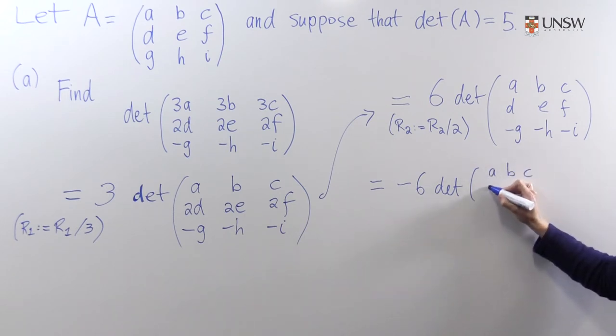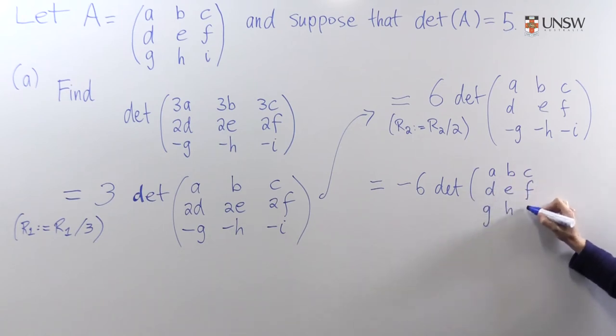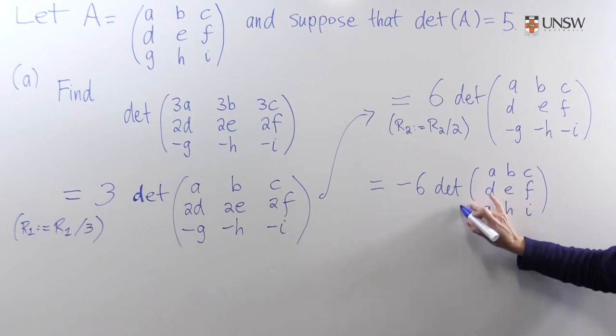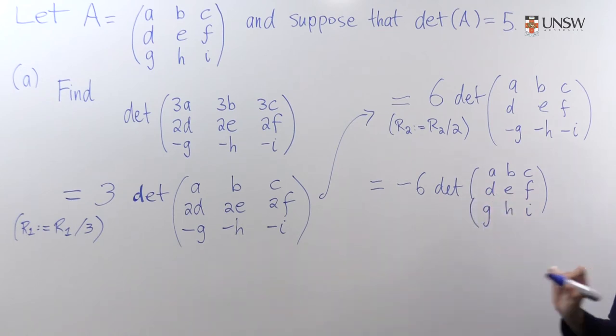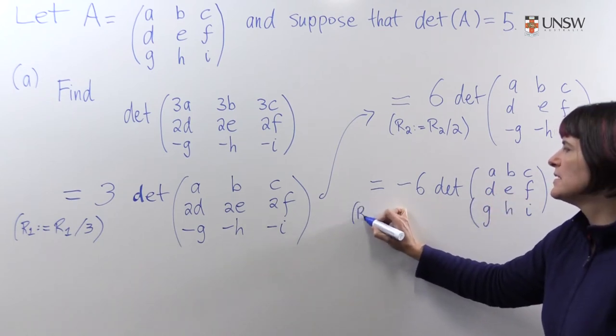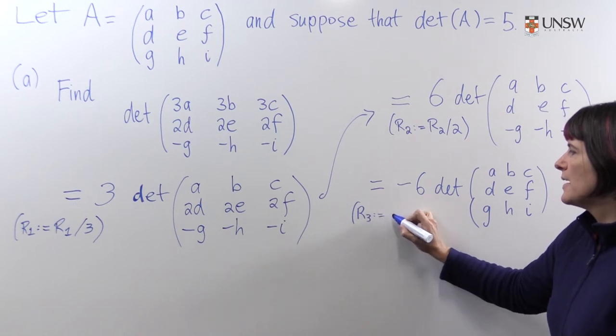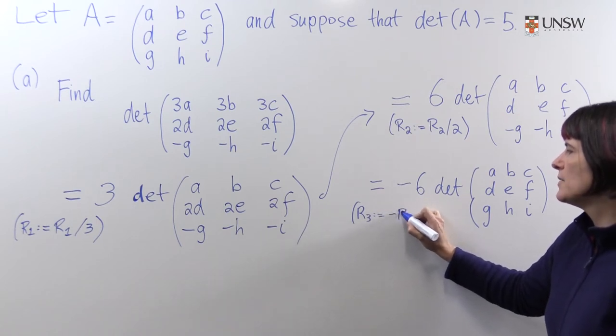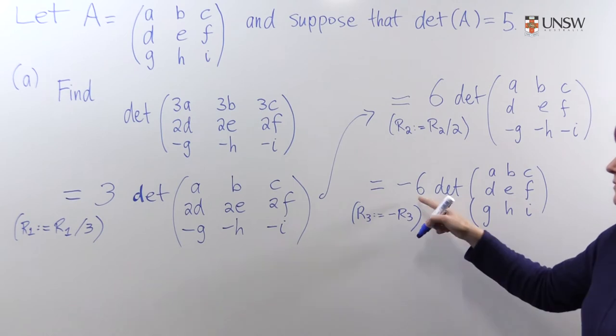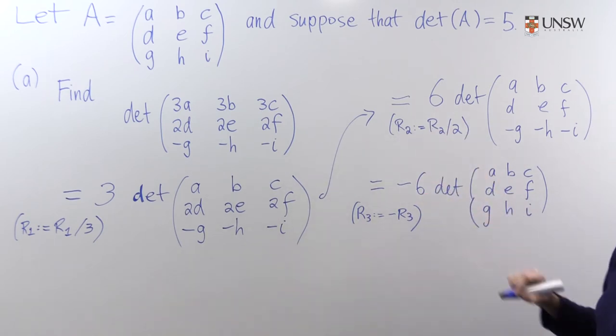A, B, C, D, E, F, G, H, I. The operation we did was R3 becomes minus R3.